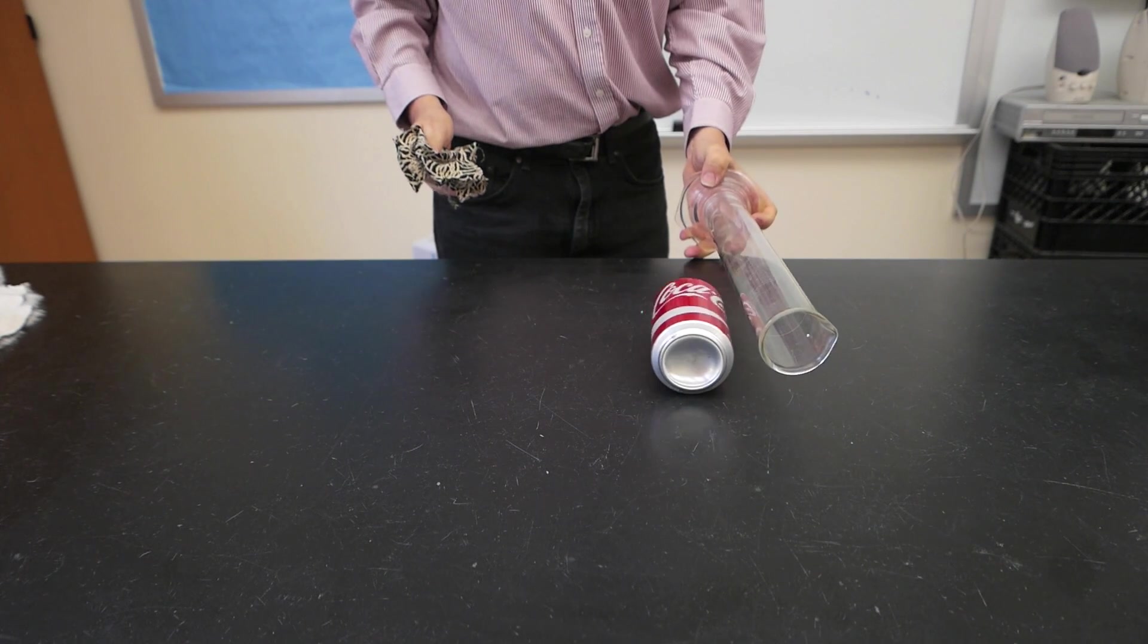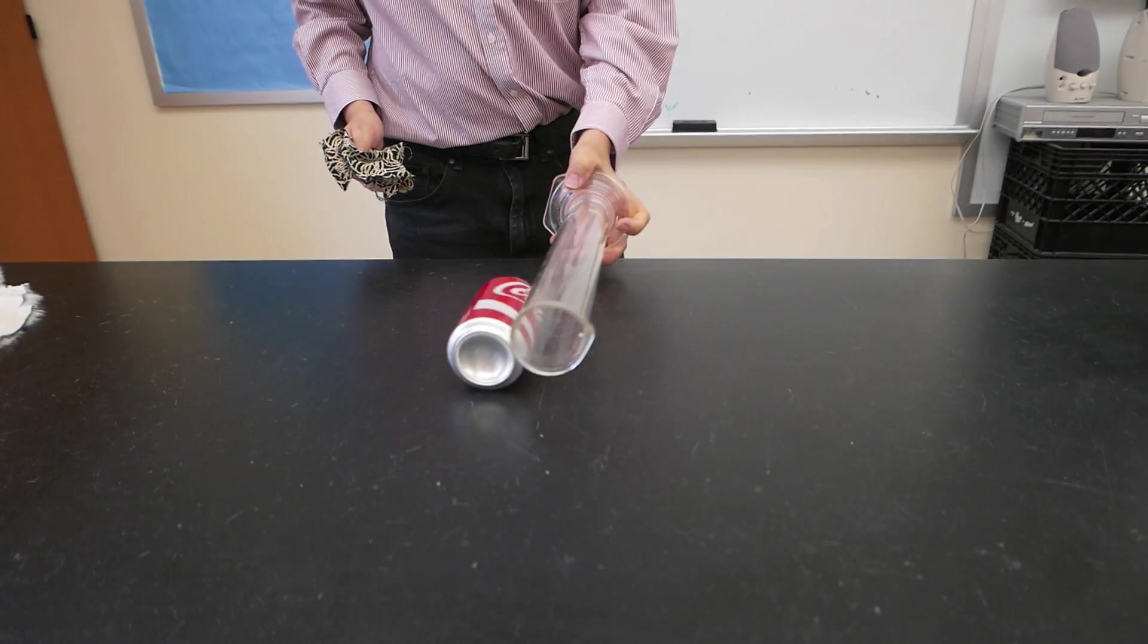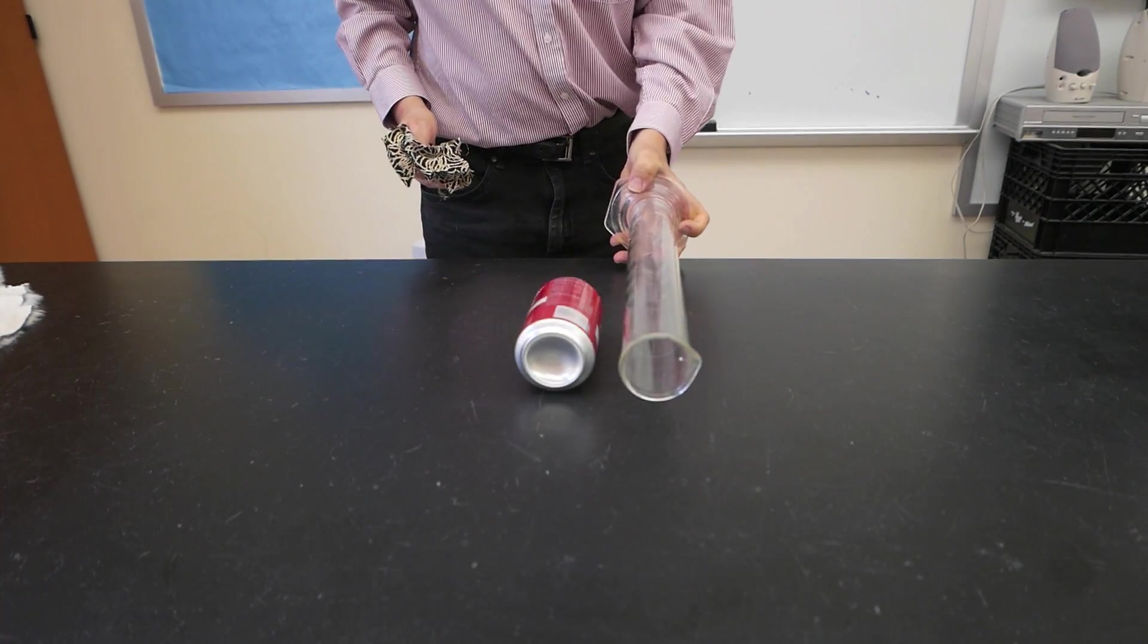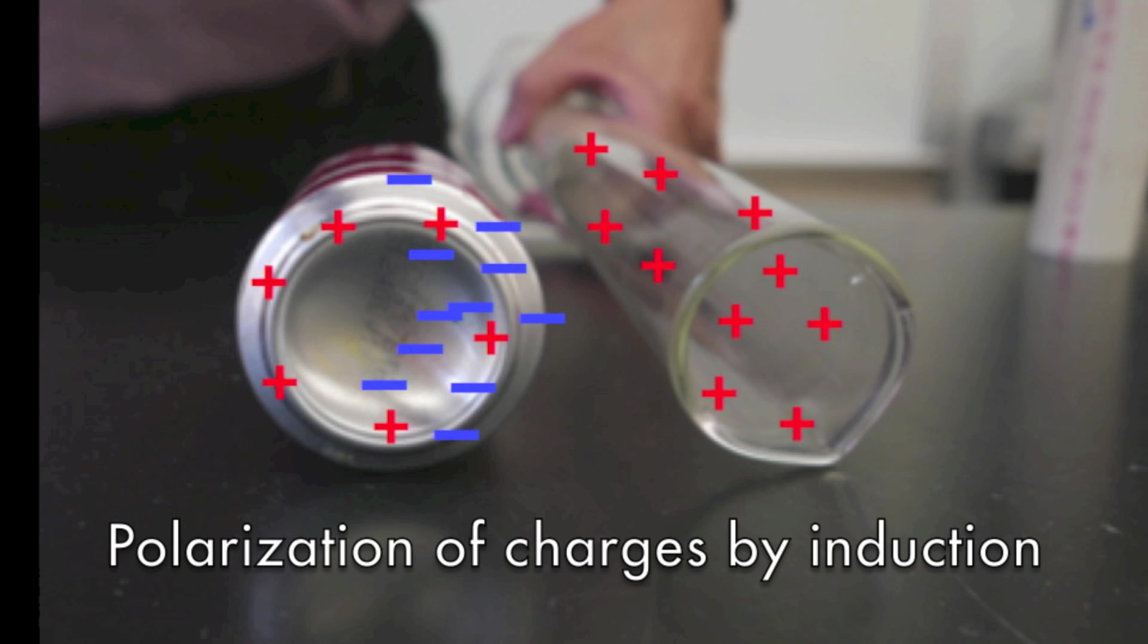Now let's try it with a positive charge. Once again we see the can being attracted through the process of induction. This time the electrons in the can are attracted so they move towards the glass.